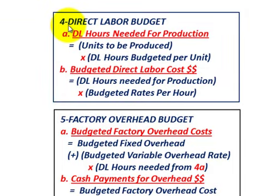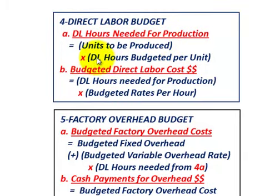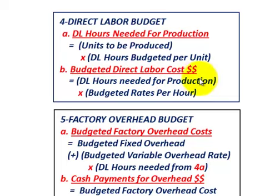For the direct labor budget, number four: item A, direct labor hours needed for production equals units to be produced times direct labor hours budgeted per unit. Item B, budgeted direct labor cost equals direct labor hours needed for production times the budgeted rate per hour.